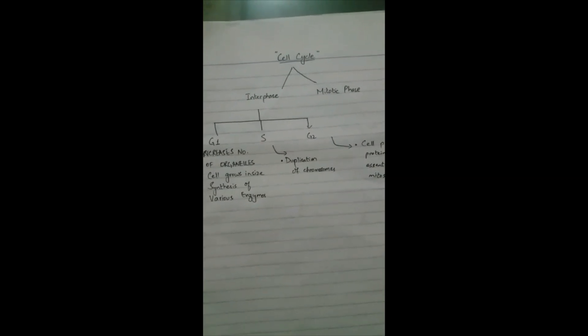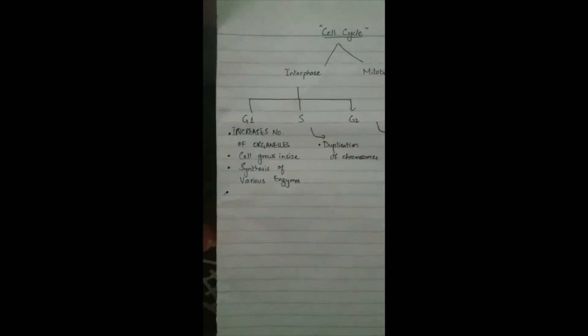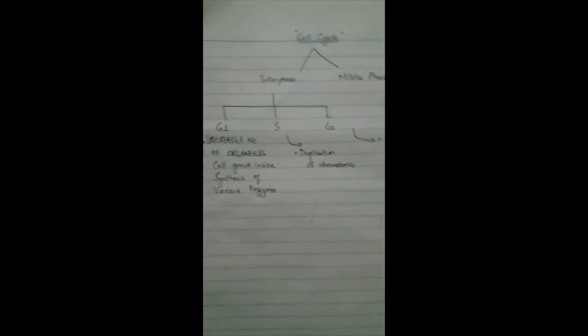The mitotic phase is just a dividing phase and is a shorter time period. Interphase consists of three main phases: number one, G1 phase; number two, S phase; and number three, G2 phase.